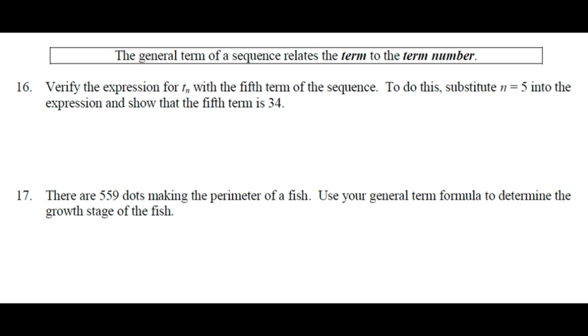Verify the expression for t sub n with the fifth term of the sequence. To do this, substitute n equals 5 into the expression and show that the fifth term is 34. So let's start off with the formula. What's math all about, right? Formula. Substitute n into the formula. Get an answer. Check the answer. Is it good? So we want t5. T sub 5 or t5 is equal to 7. Wherever I see an n, I'm going to put a 5. Which is 35 minus 1, which is 34.